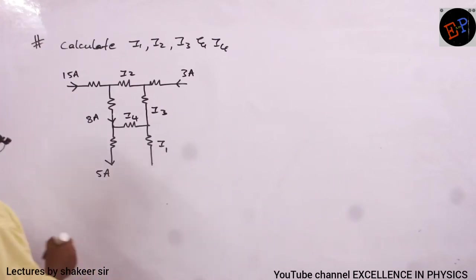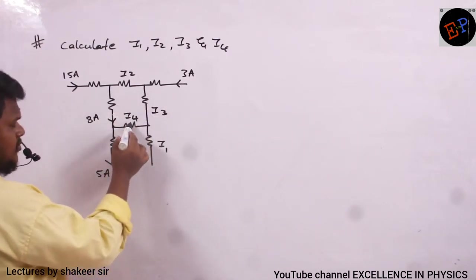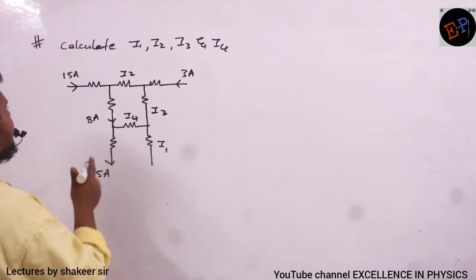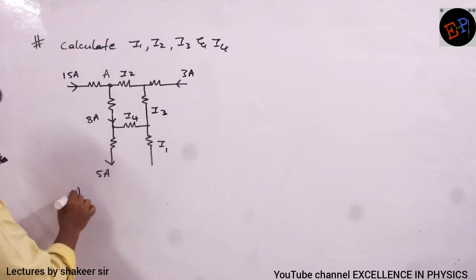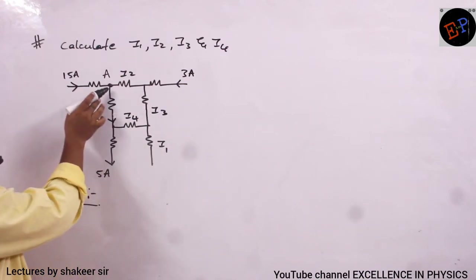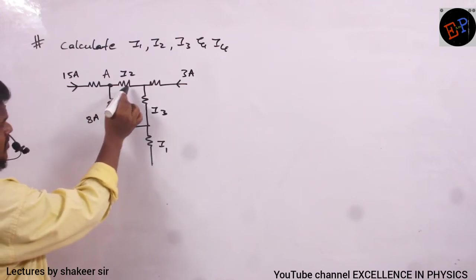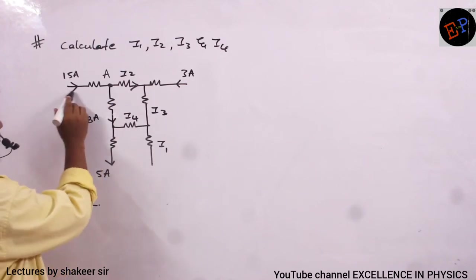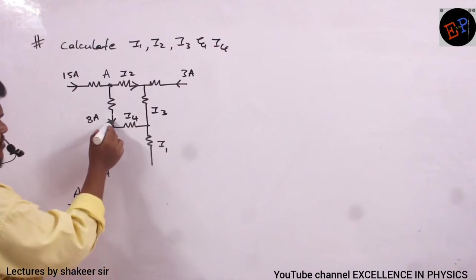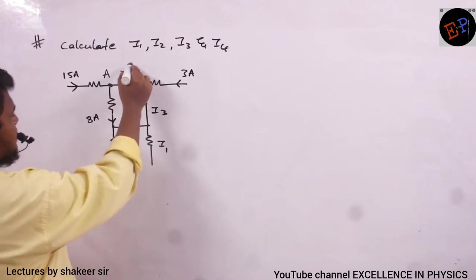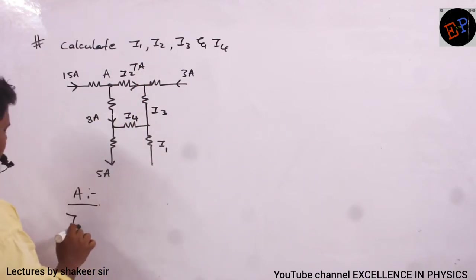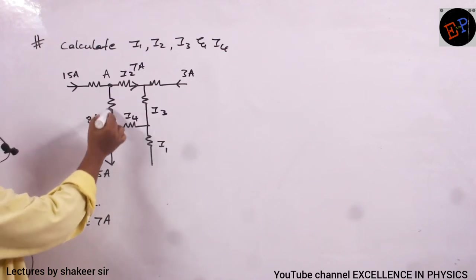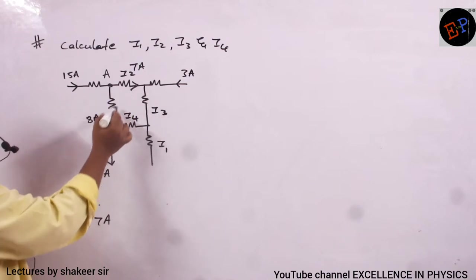Here is a question based on Kirchhoff's current rule. Unknown quantities are I1, I2, I3, and I4. At junction A, 15 amperes is entering and 8 amperes is leaving, so remaining current must flow in the other direction. 15 amperes is entering but only 8 amperes is leaving, so remaining 7 amperes must be the value of I2. Therefore, I2 = 7 amperes.